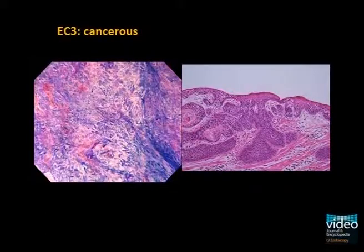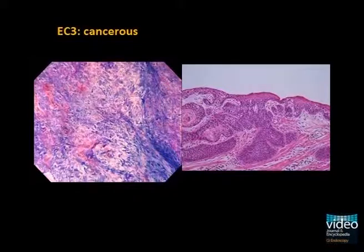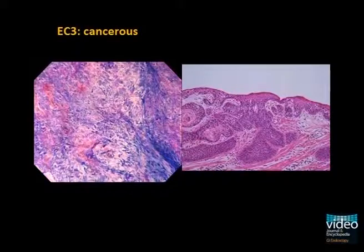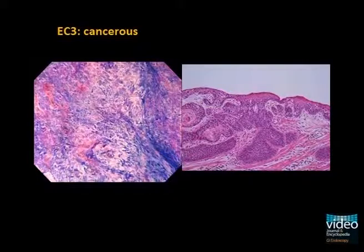The cytoscopy image shows an increased number of cells with small cells having very enlarged and blurred nuclei. This is a typical image of a cancerous region, EC3. The right side image shows histology of squamous cell carcinoma.